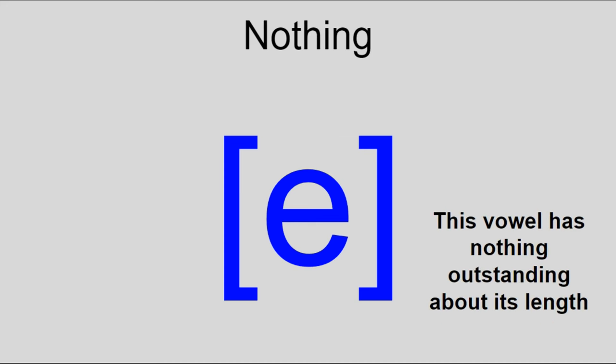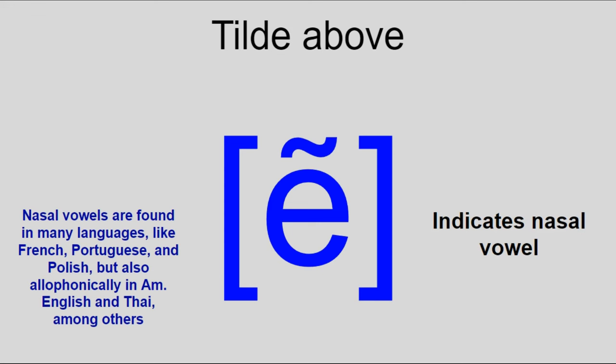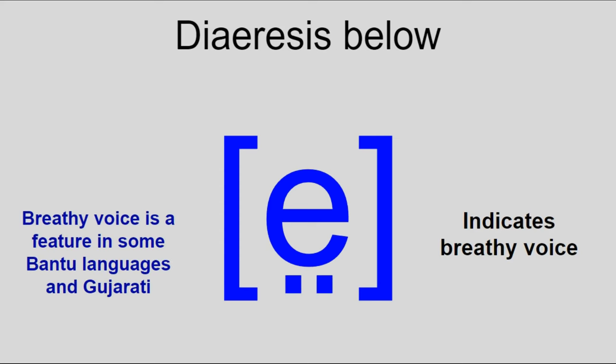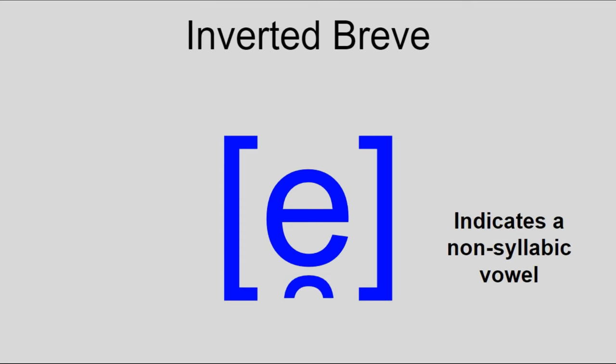Now for some other vowel features. The tilde above indicates a nasal vowel. The tilde below indicates creaky voice. And the diaeresis below indicates breathy voice. Also in diphthongs, the vowel that isn't the main part of the syllable will get an inverted breve below it.